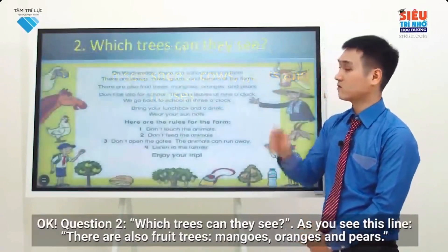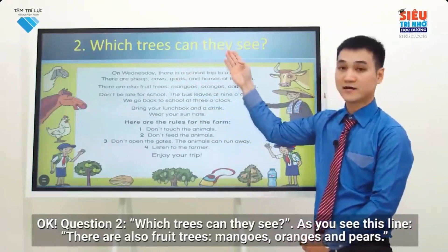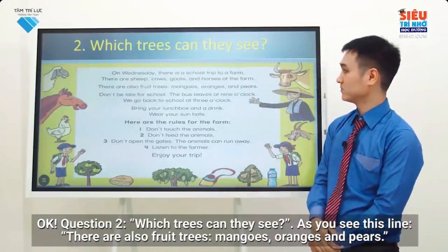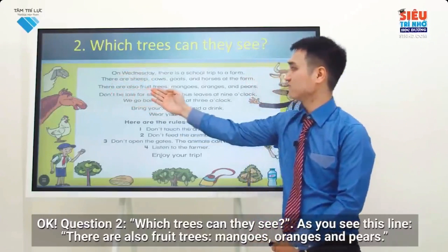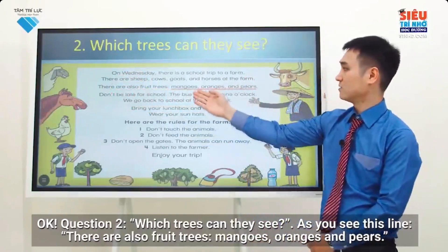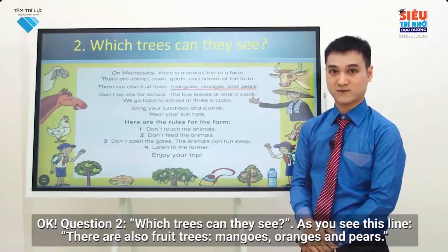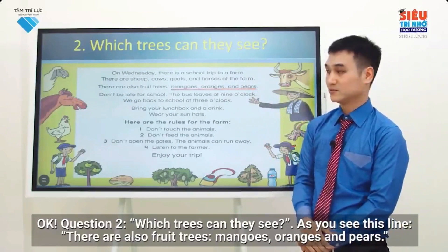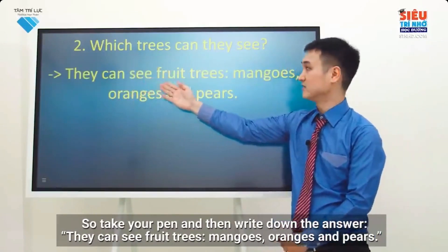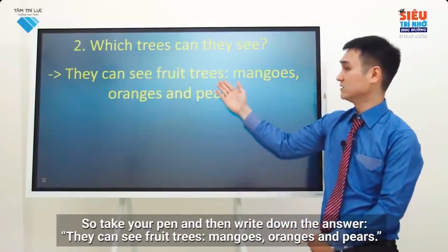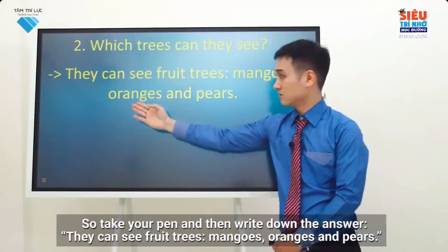Question two: which trees can they see? As you see this line — there are also fruit trees: mangoes, oranges, and pears. So take your pen and write down the answer: they can see fruit trees — mangoes, oranges, and pears.